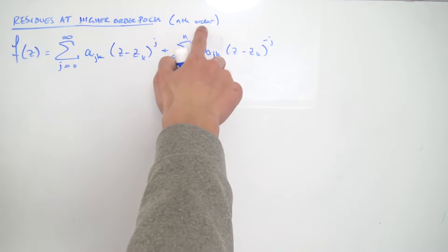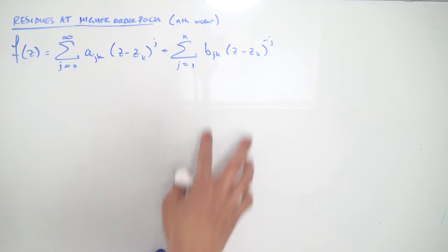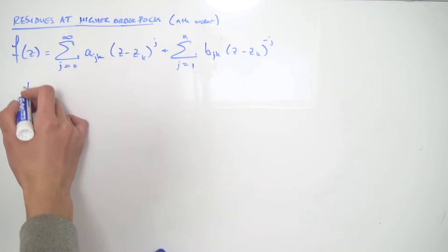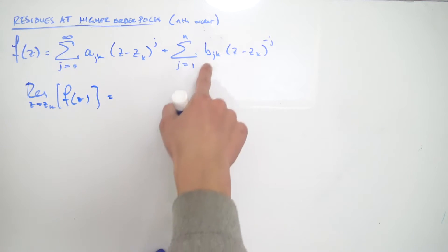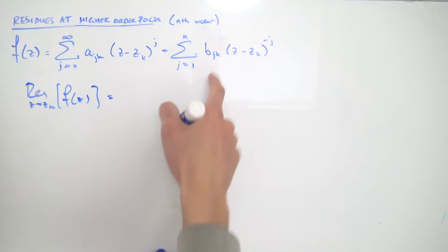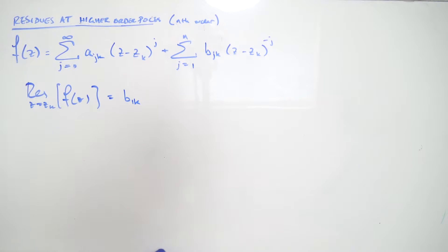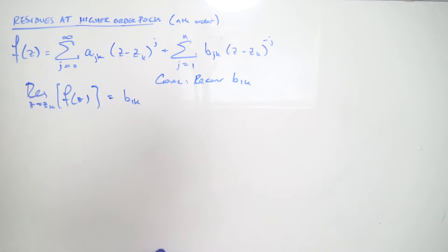If we have a pole of order n, that means the highest term on our principal part is n. So this principal part on our Laurent series only has finitely many terms. If we want to find the residue at z equals z_k on f(z), that's defined to be the coefficient b evaluated at j equals 1, so we have the coefficient b_sub_1k. This is our goal — to recover b_sub_1k.